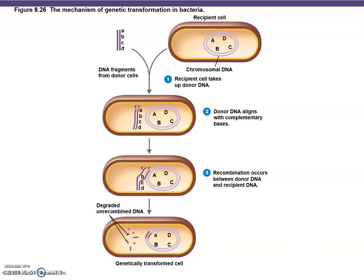This diagram shows the mechanism of genetic transformation in bacteria. You have a recipient cell with genes A, B, C, D, and you align a piece of foreign donor DNA. Using complementary base pairing, you align the sequences and insert a piece of the donor DNA into the host cell genome — shown as the darker purple area. Now we have recombinant DNA containing a new stretch from the donor.